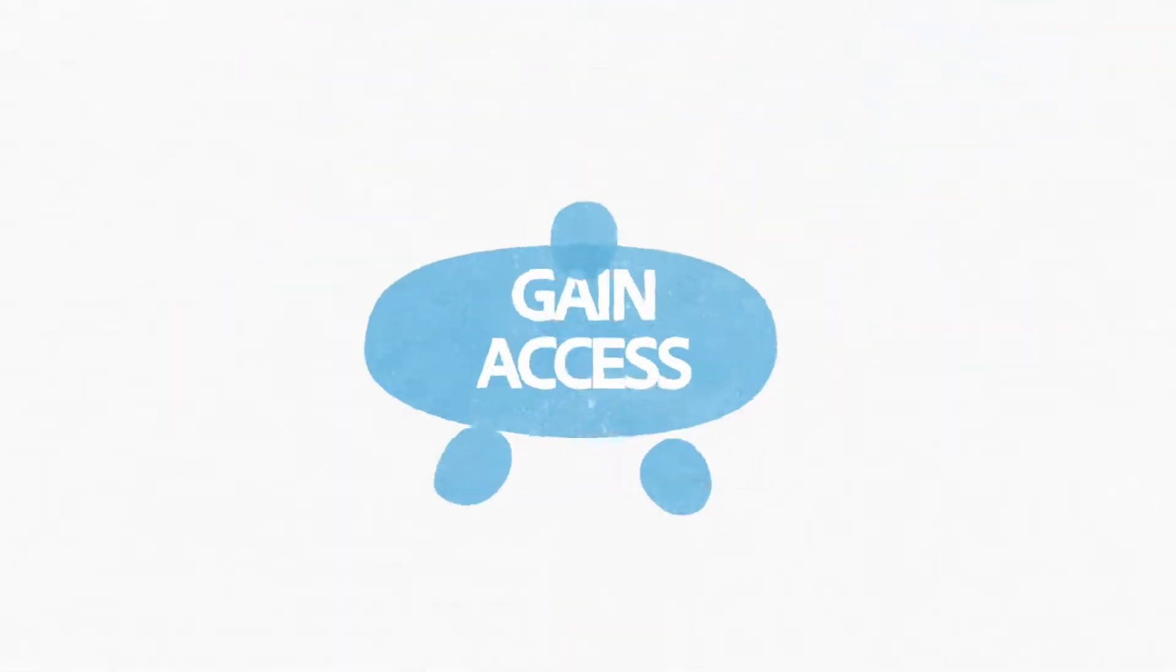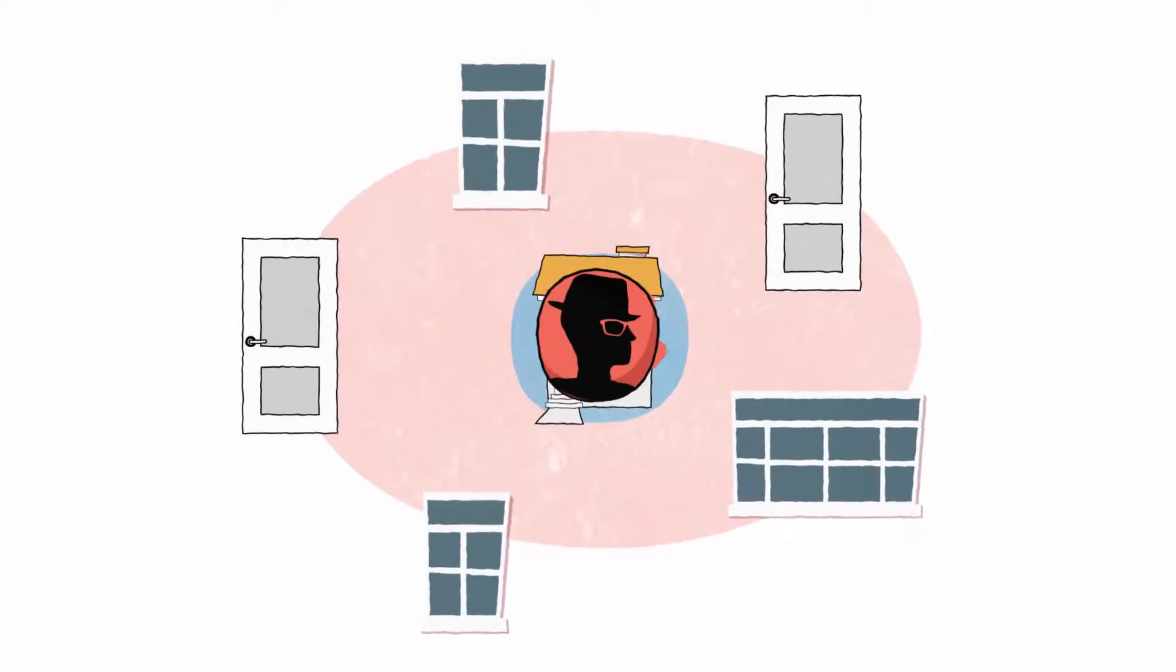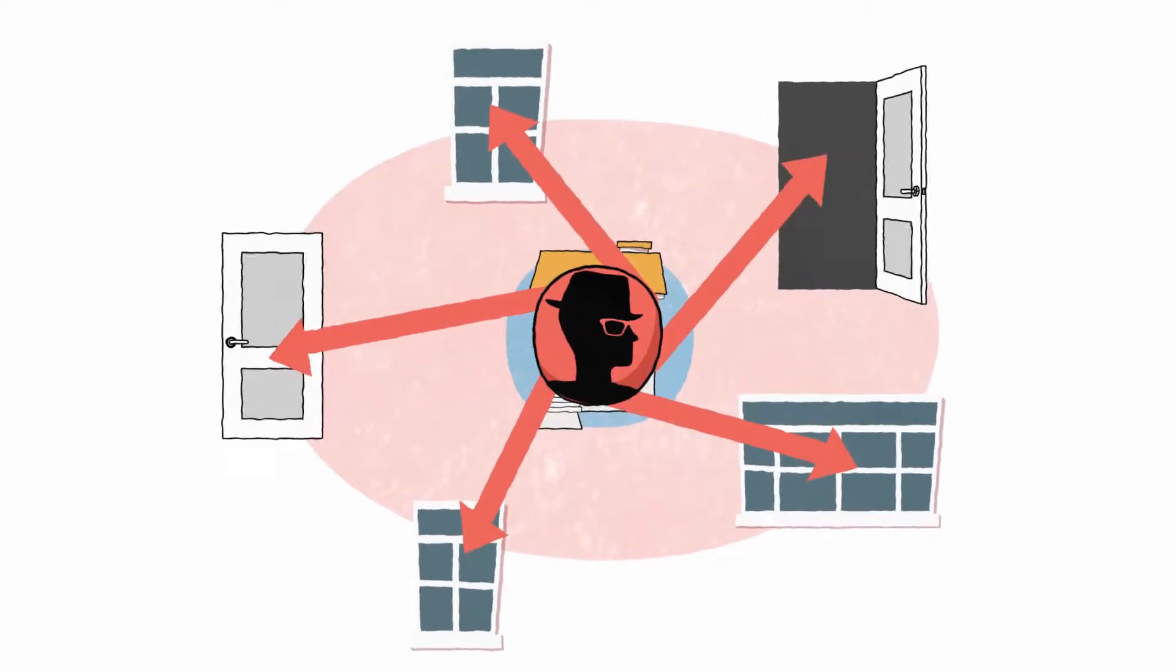Phase 2: Gain Access. Once a red team has a clear understanding of their target and the vulnerabilities, they can plan for and execute the best ways to gain access.